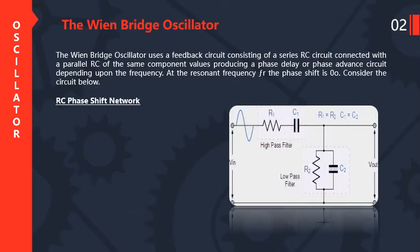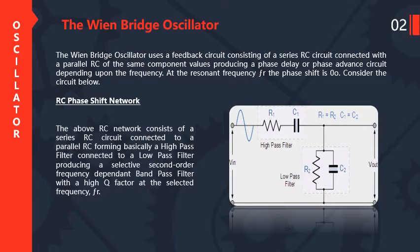Consider the circuit below. This is the circuit diagram for the RC phase shift network. We use this network to shift the phase — either to delay it or to advance it. This circuit consists of two combinations of RC elements: first, R and C connected in series called the high-pass filter, and R and C connected in parallel called the low-pass filter. The RC network consists of a series RC circuit connected to a parallel RC, forming basically a high-pass filter connected to a low-pass filter, producing a selective second-order frequency dependent band-pass filter with a high Q factor. Q factor is the quality factor at the selective frequency FR.